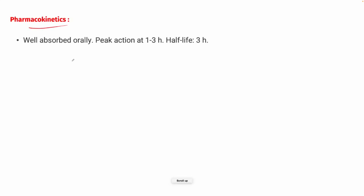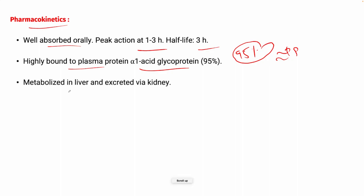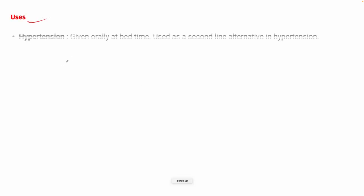The pharmacokinetics of prazosin: it is well absorbed orally, peak action is at one to three hours, and half-life is three hours. It is highly bound to plasma proteins — specifically alpha-1 acid glycoprotein — at 95%. It is metabolized in the liver and excreted by the kidneys.